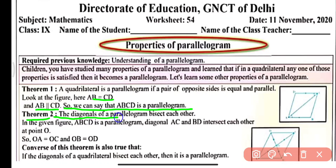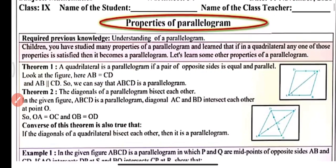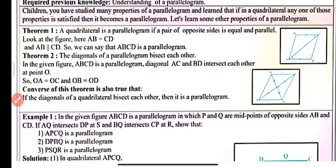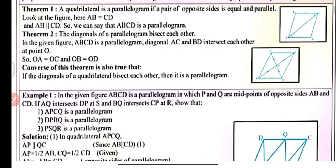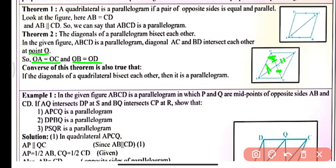Theorem 2: The diagonals of a parallelogram bisect each other. In figure 2, parallelogram ABCD has diagonals AC and BD bisecting each other at point O. The two parts are equal, so OA equals OC and OB equals OD.